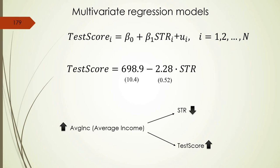So we have the case of an omitted variable — a variable that is actually influencing both our independent variable and our dependent variable, so influencing both x and y.